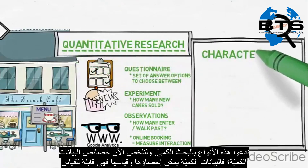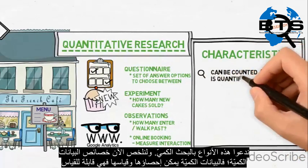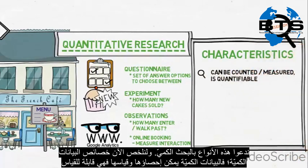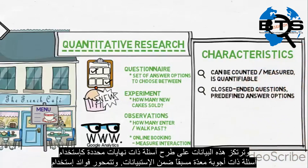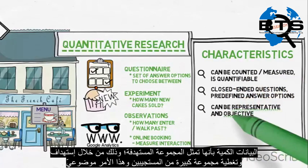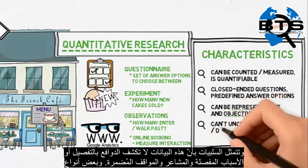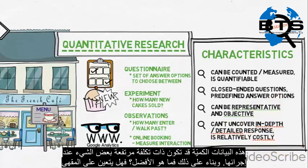Let us summarize the characteristics of quantitative data. Quantitative data can be counted and or measured — it is quantifiable. It is based on asking closed-ended questions, for example by providing predefined answer options in a questionnaire. The benefits of quantitative data are that it can be representative of the target group since a larger number of respondents can be covered, and that it is objective. However, the disadvantages are that it does not uncover in-depth motivations, detailed reasons, or underlying feelings and attitudes, and some types of quantitative research can be fairly costly to carry out.